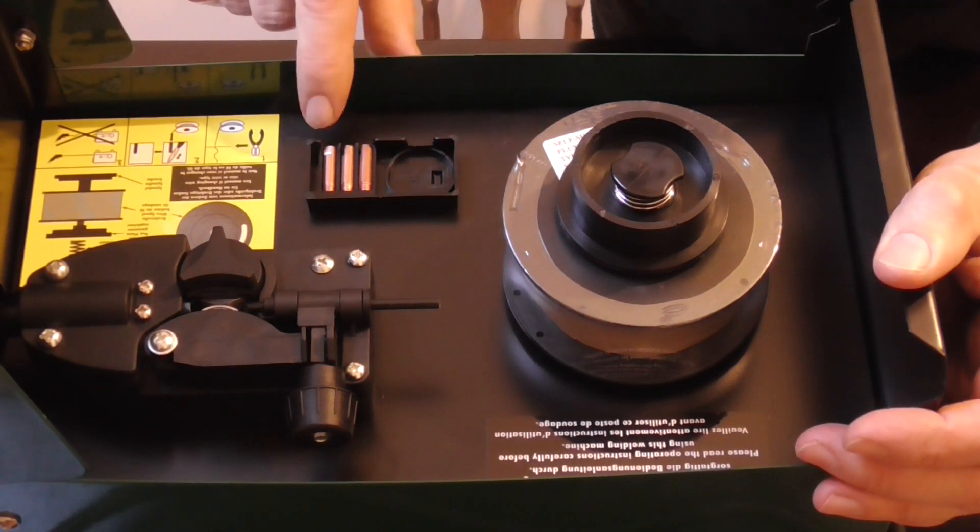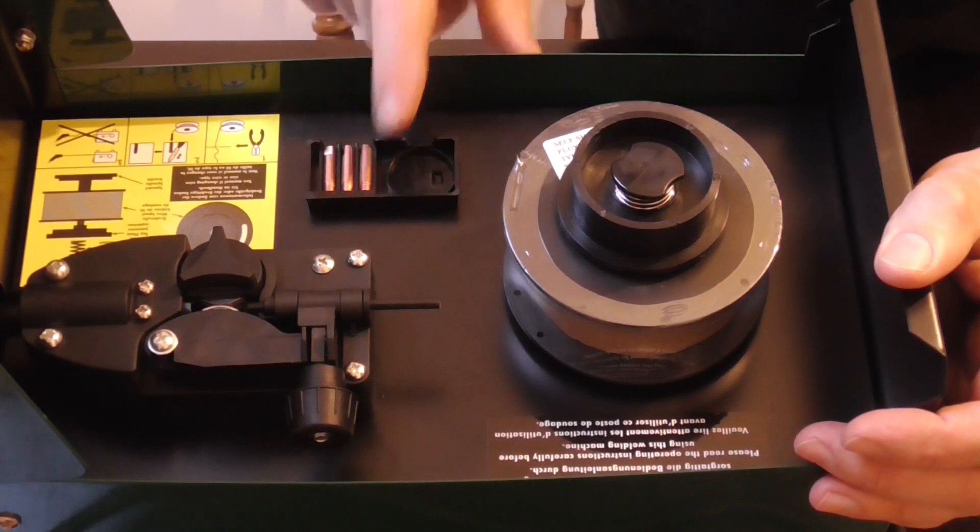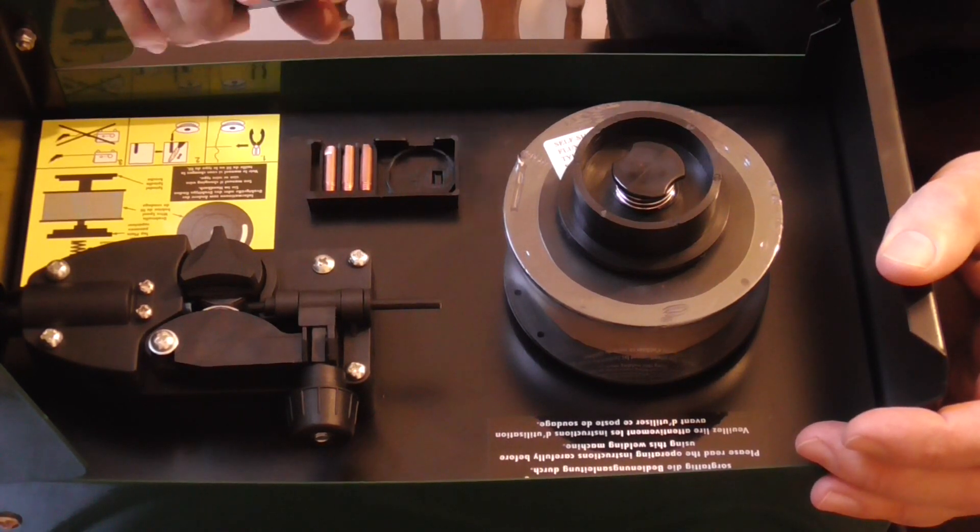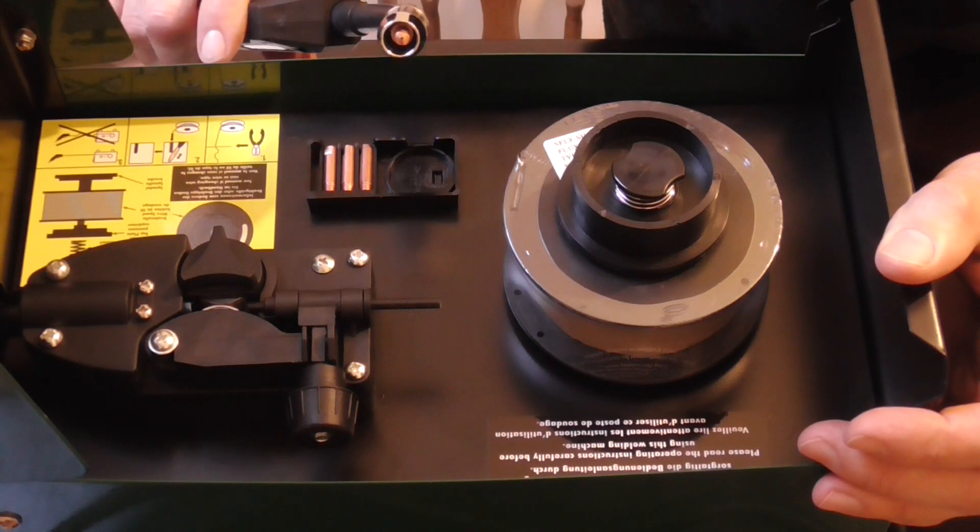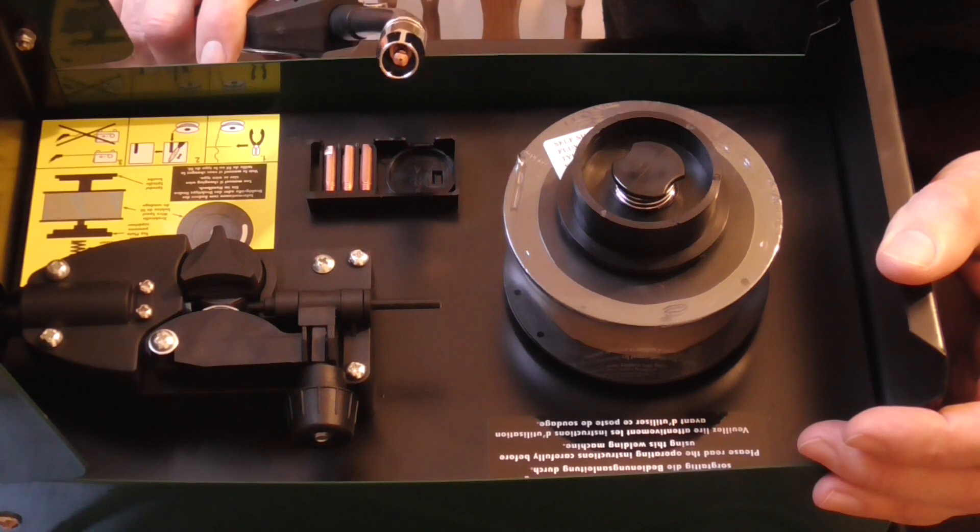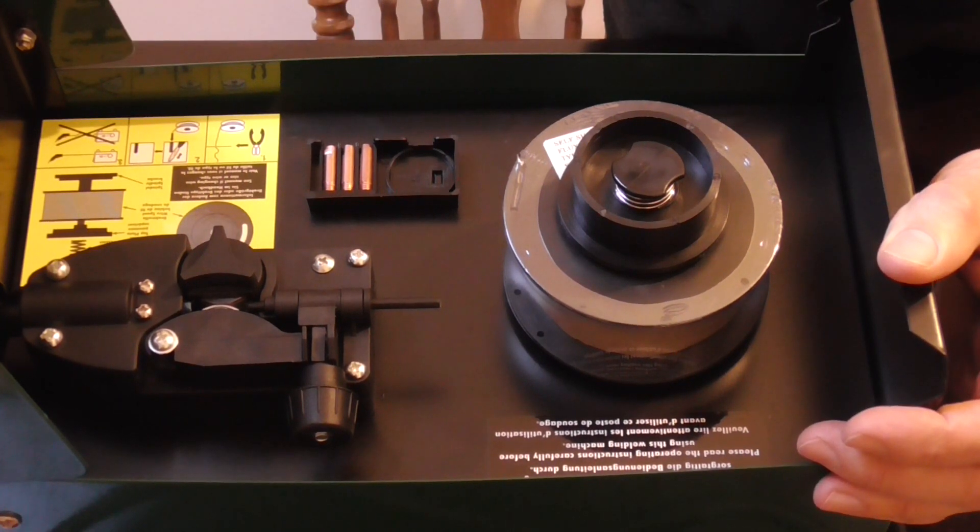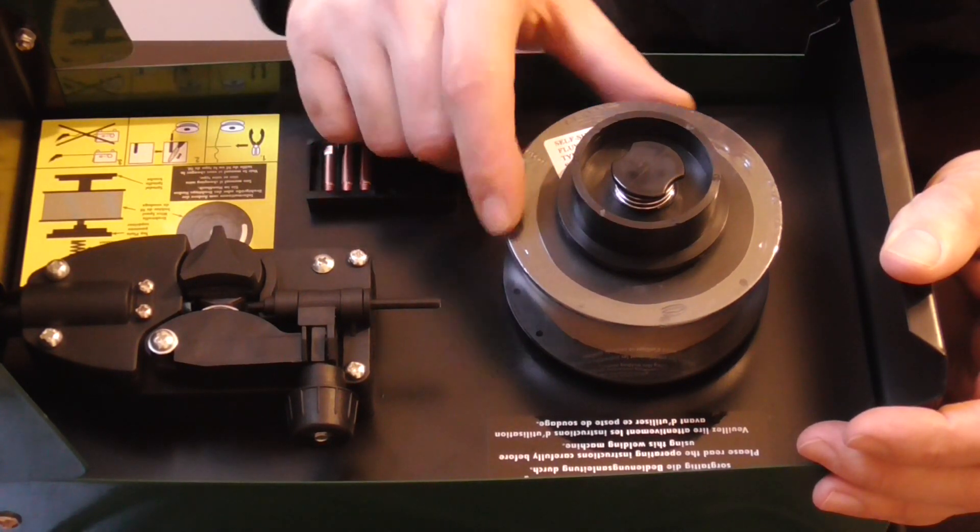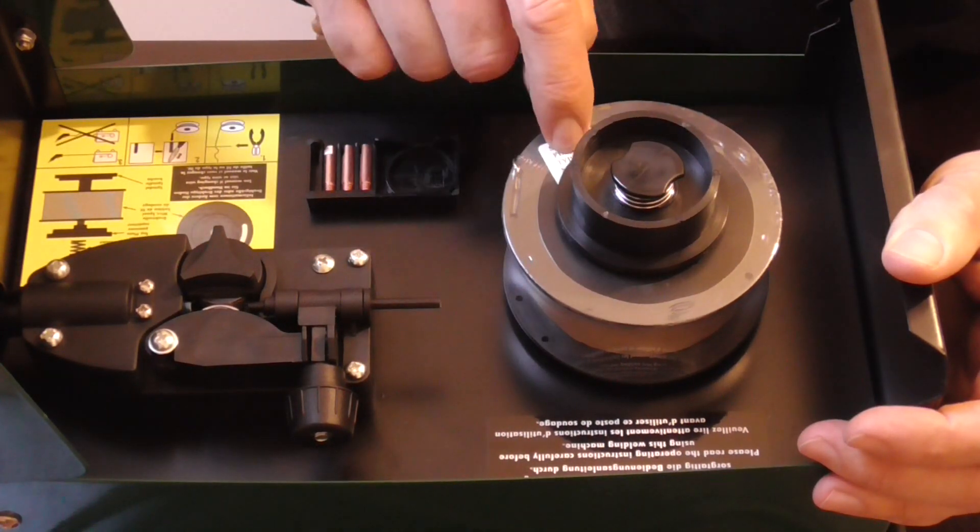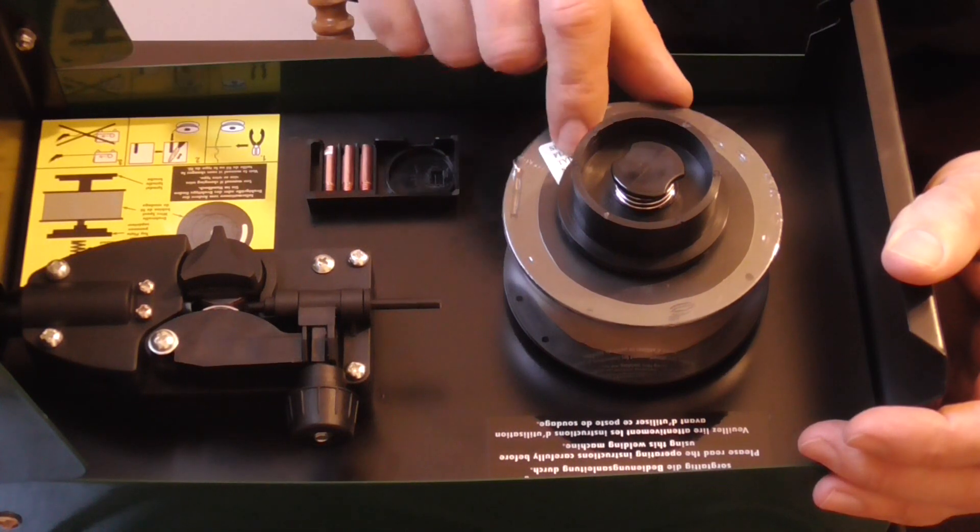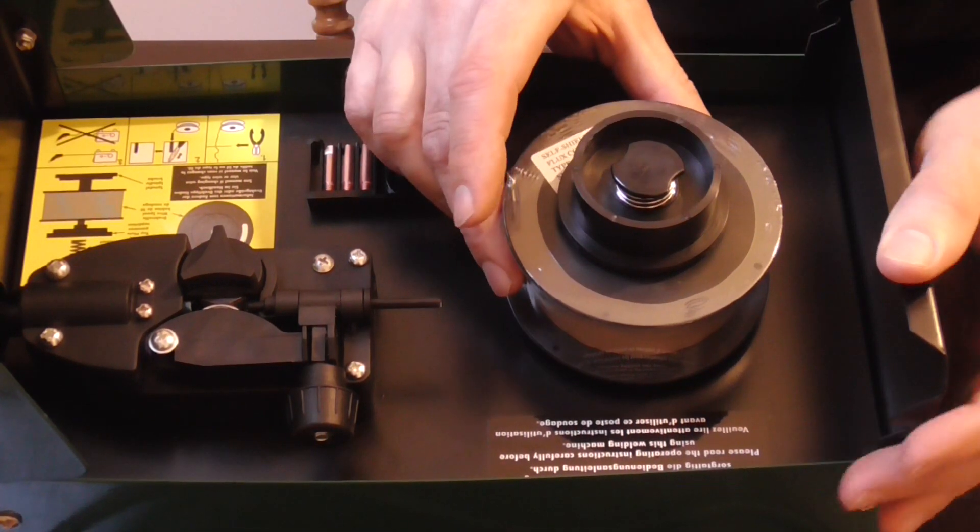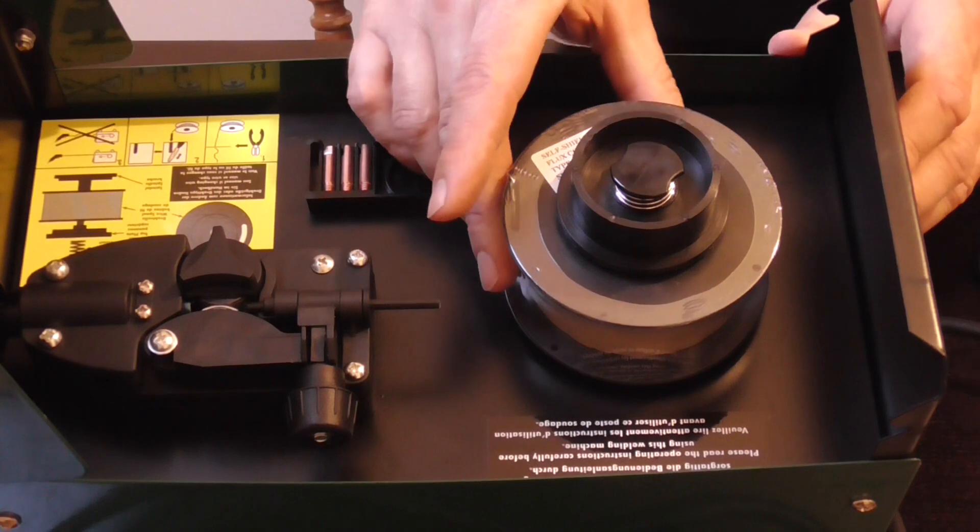So inside we have three nozzles here. We also have another nozzle in the torch itself. These sizes are 0.6, 0.8, 0.9, and 1mm. There's a roll of wire and that's a 4.5 kg reel.